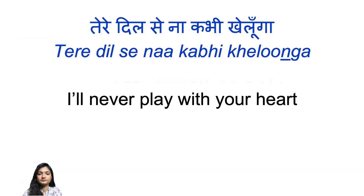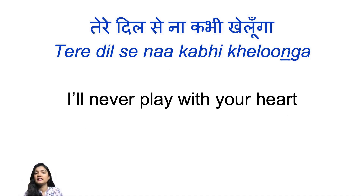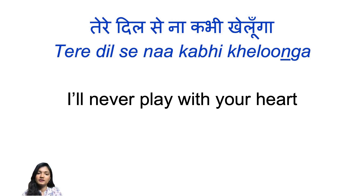The next line is: Tere dil se na kabhi khelunga. Dil is heart and it's a masculine noun. Khelunga comes from khelna — to play. To play with somebody's heart is also khelna. So: tere dil se — with your heart — na kabhi — kabhi nahi is the same as kabhi na or na kabhi, which means never — khelunga, will play. I will never play with your heart.